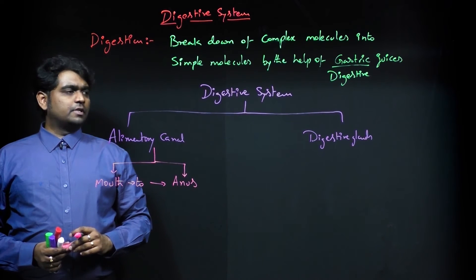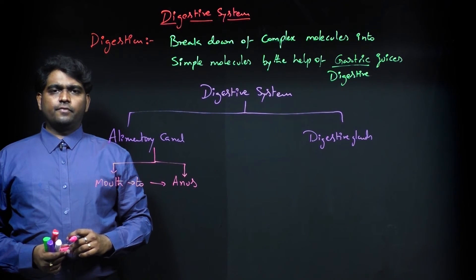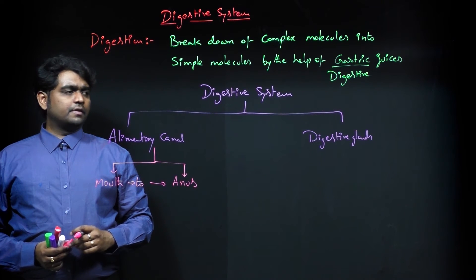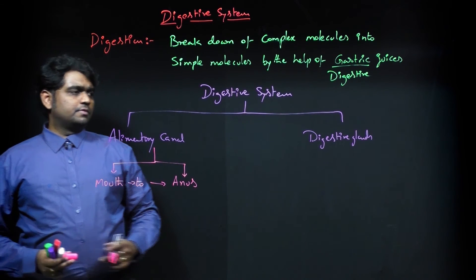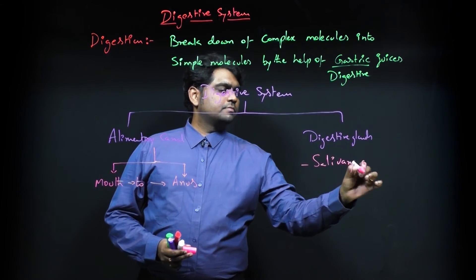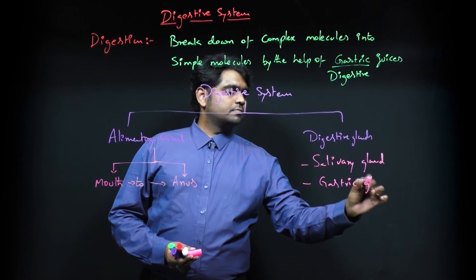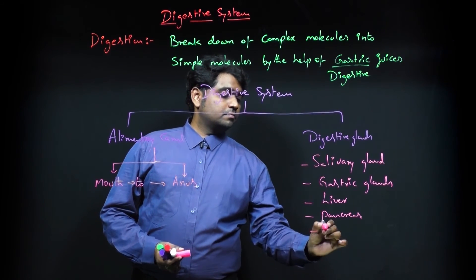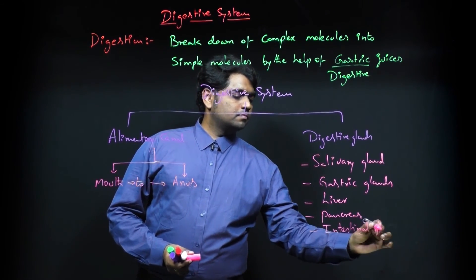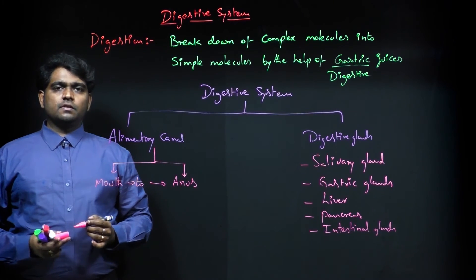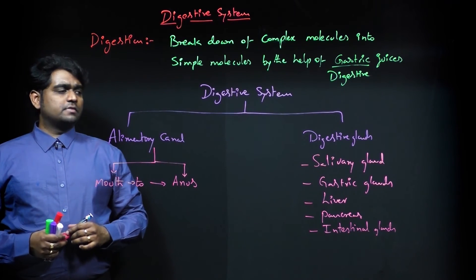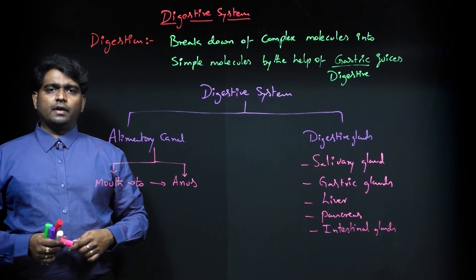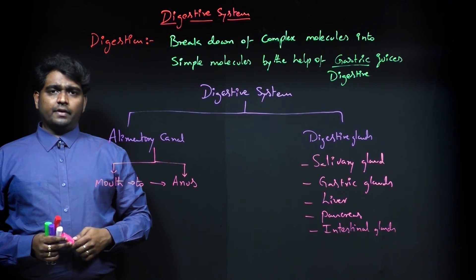The digestive glands are mainly five types. There are three pairs of salivary glands, gastric glands, the liver (also called hepatic), the pancreas, and finally the intestinal glands.